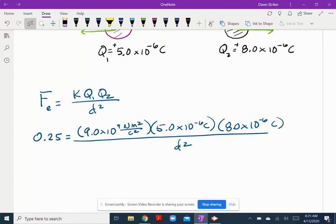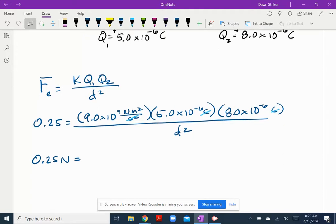So I can solve, I can multiply these three numbers on the top first. 0.25, that's a Newton, is equal to, but before I do that, let's pay attention to the units. And so I've got Newton meters squared on the top and on the bottom I've got Coulombs squared, but Coulombs squared and Coulombs and Coulombs will cancel. And so that's going to leave me with a Newton meter squared on the top.